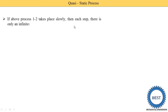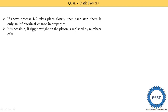Now, if the above process 1 to 2 takes place slowly — earlier the process was very fast when we removed the weight and the piston suddenly moved — but if we do this process slowly, and at each step there is only an infinitesimal change in properties, it is possible if the single weight on the piston is replaced by a number of many small pieces of weight, as shown in this figure.